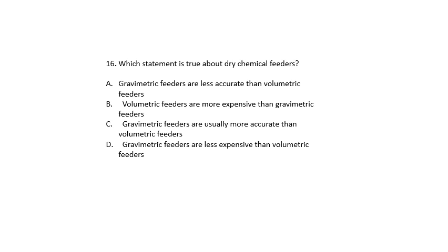Question 16. Which statement is true about dry chemical feeders? Gravimetric feeders are less accurate than volumetric feeders? Volumetric feeders are more expensive than gravity flow. Gravimetric feeders are usually more accurate than volumetric feeders? Or gravimetric feeders are less expensive than volumetric feeders? The best answer for this one is C. Gravimetric feeders are usually more accurate than volumetric feeders.